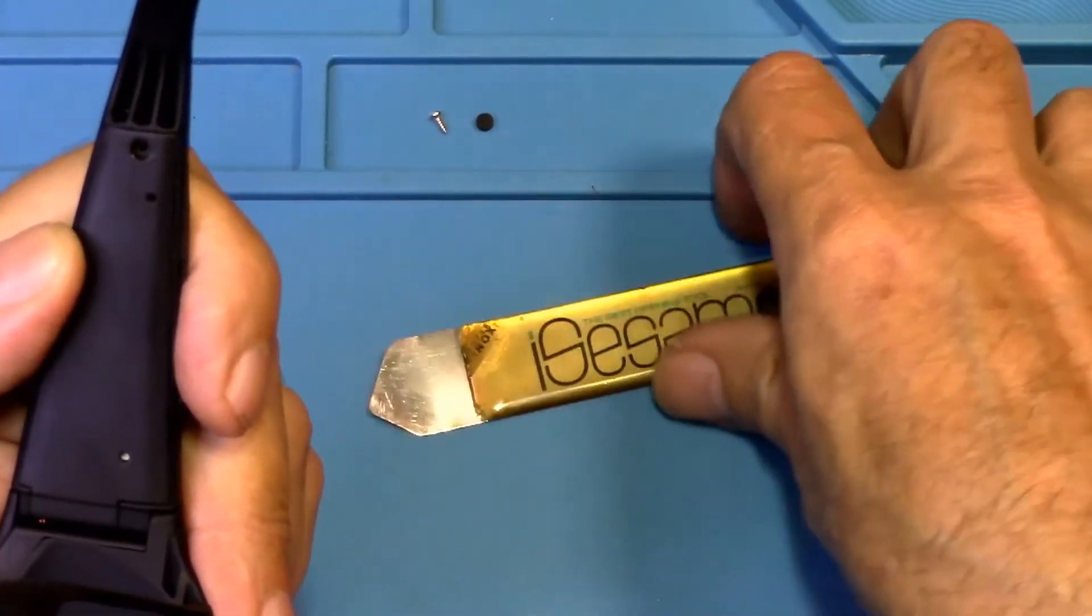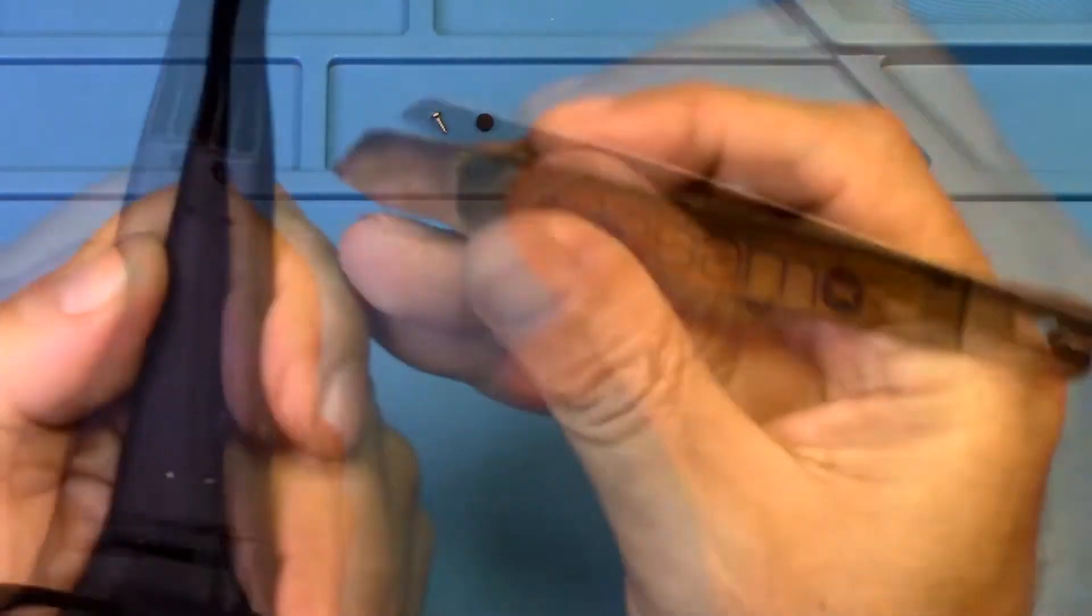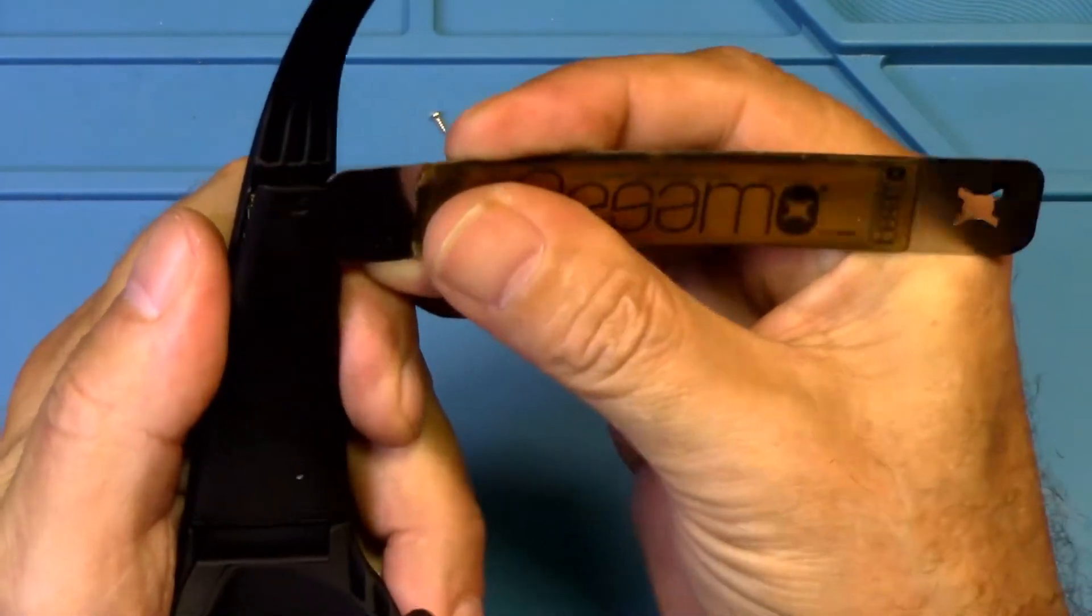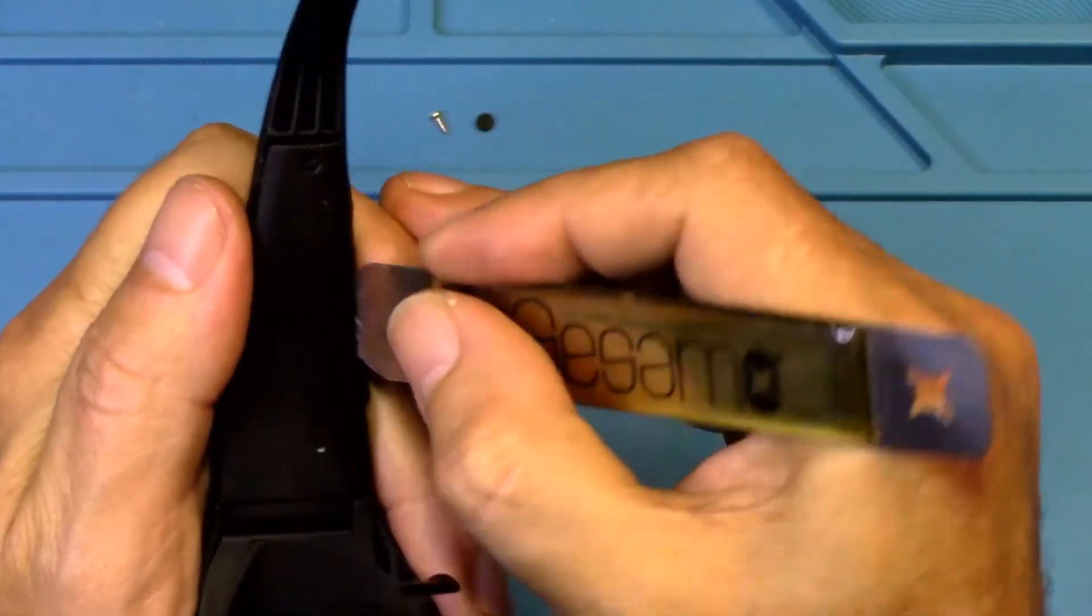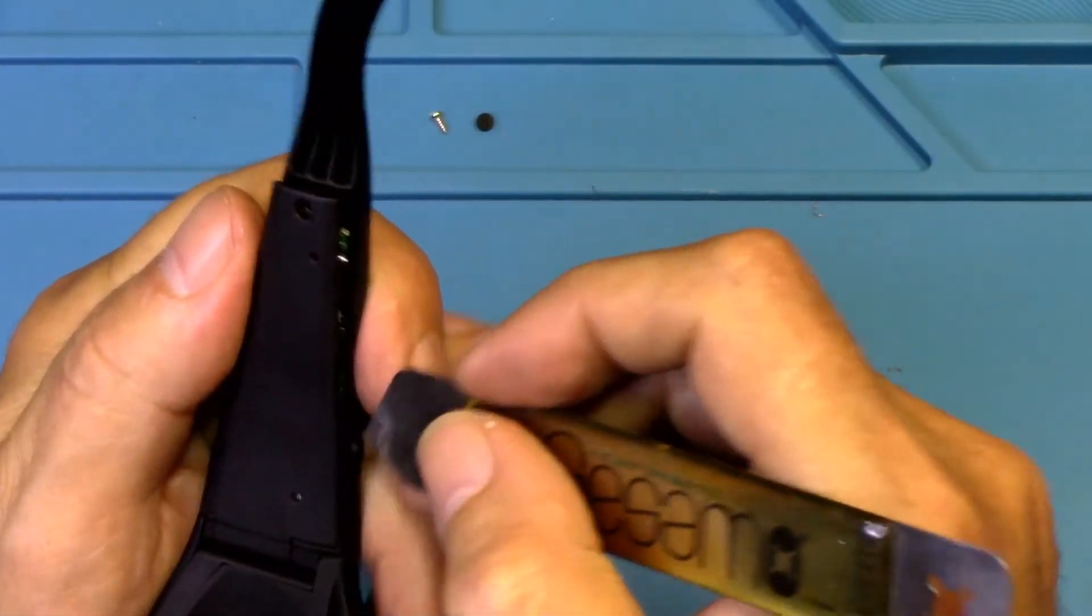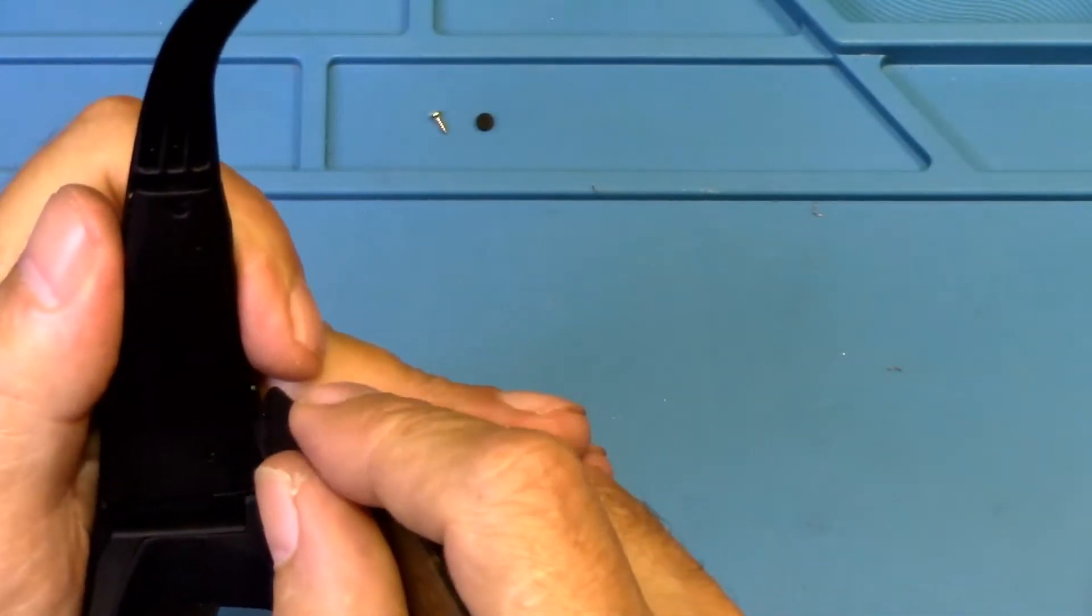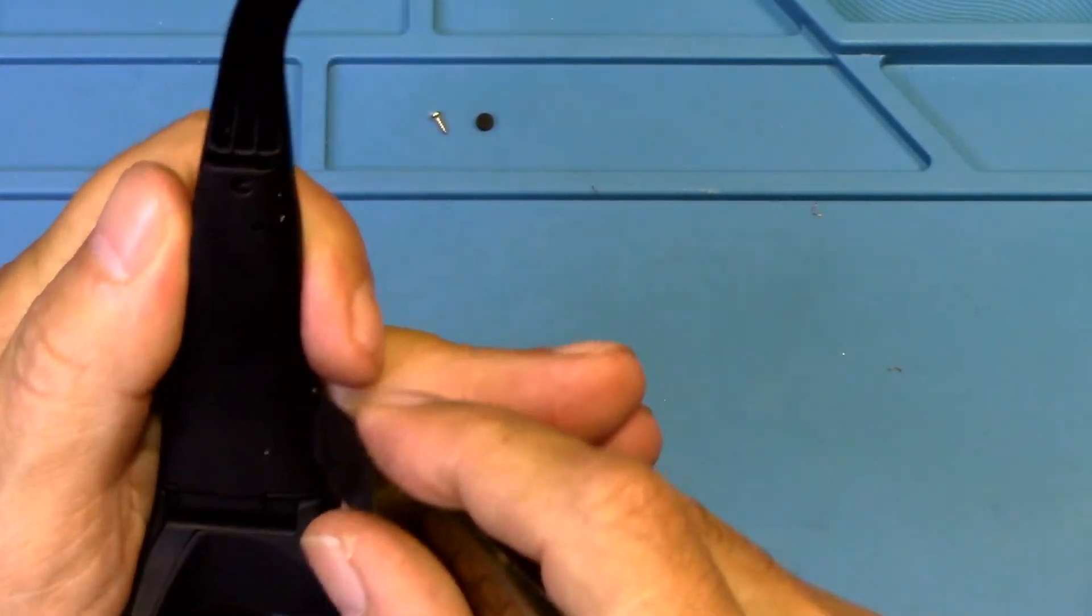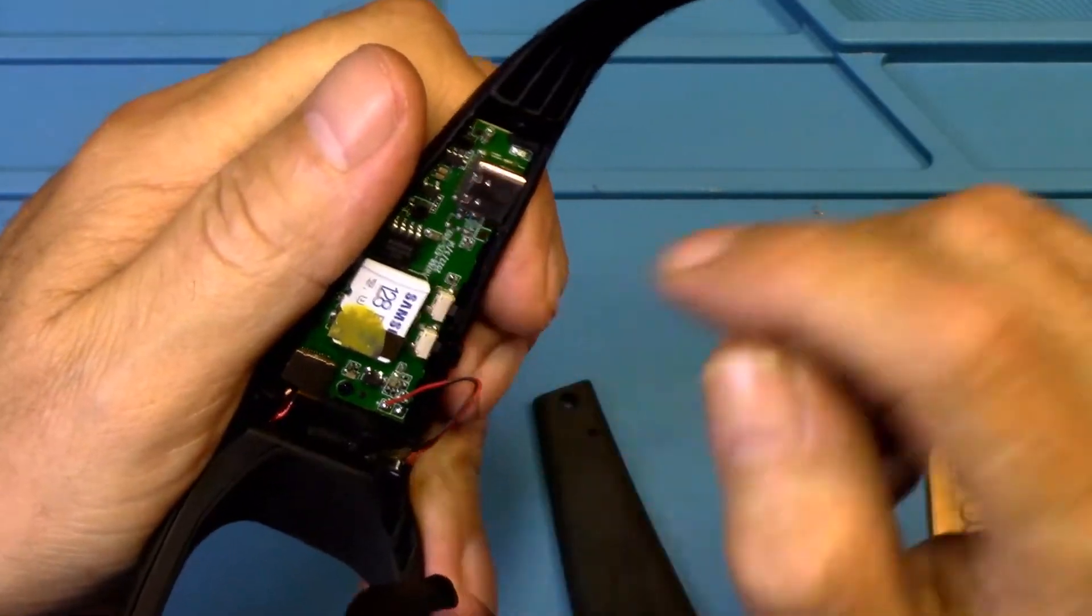Now let's take our little pry tool here, see how easily this pops out. Hopefully it pops out pretty easy. I might have to do a Big Clive thing and say one moment please.